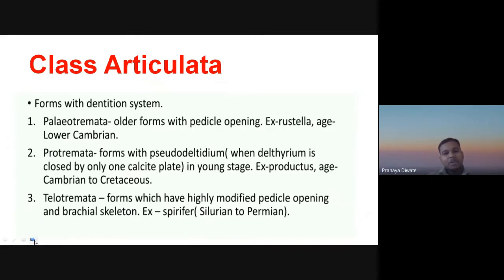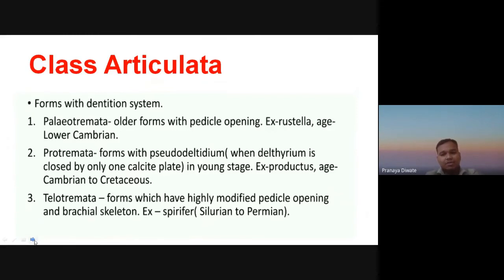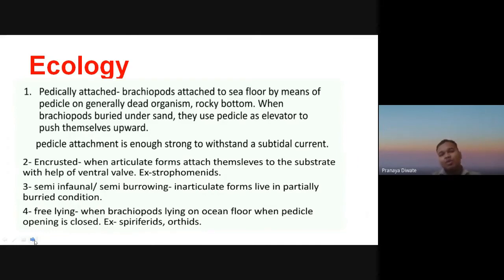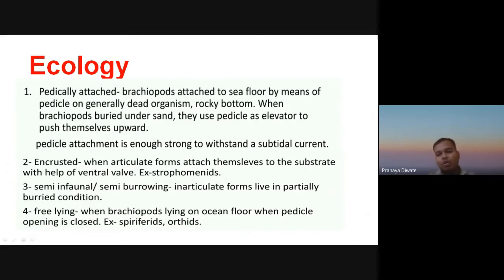Under Class Articulata we have: Paleotremata — older forms with a pedicle opening, example Rastrella, age Lower Cambrian; Protremata — forms which develop a pseudo-deltidium in young stage; and Telotremata — forms with highly modified pedicle opening and a brachial skeleton.